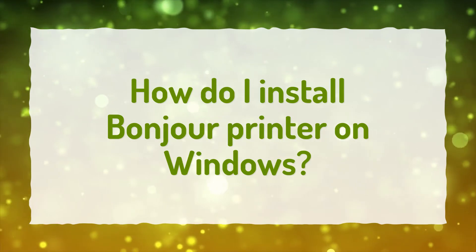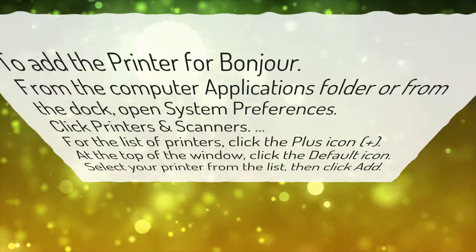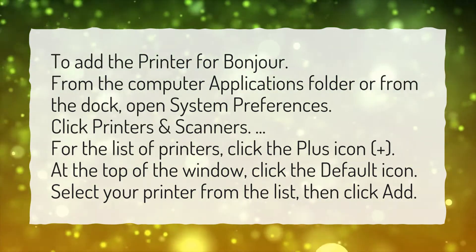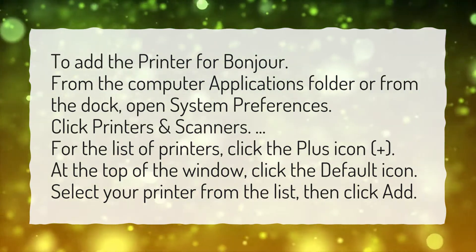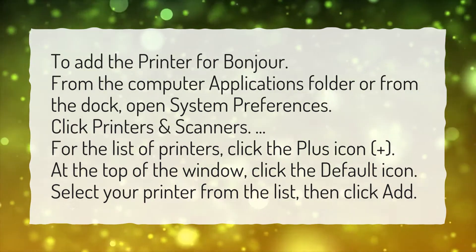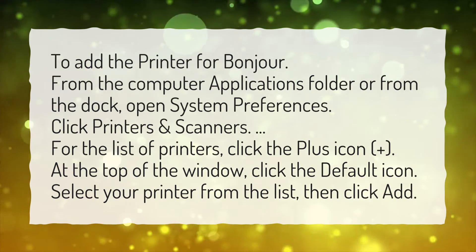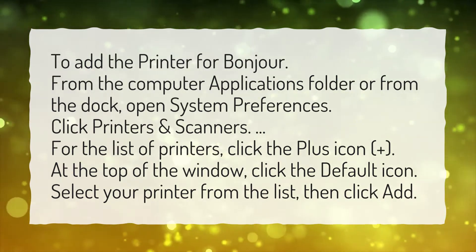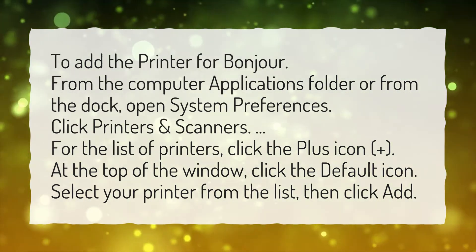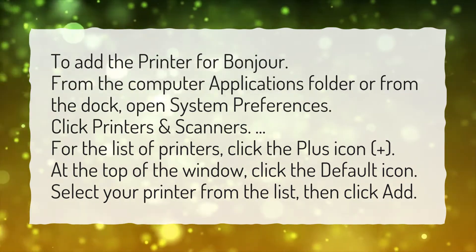How do I install a Bonjour printer on Windows? To add the printer for Bonjour, from the Computer Applications folder or from the dock, open System Preferences. Click Printers and Scanners. For the list of printers, click the plus icon. At the top of the window, click the default icon. Select your printer from the list, then click Add.